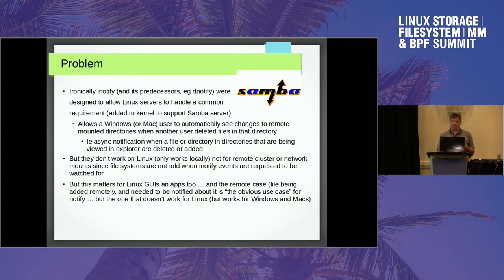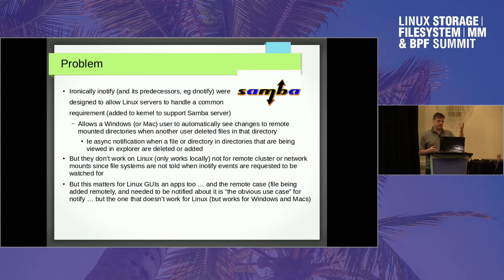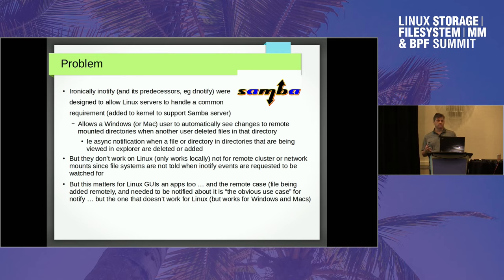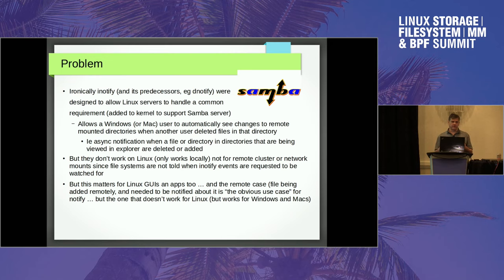Network file system clients or cluster clients have no way of waiting on notify events easily right now. Maybe they could hook it in user space. In the SMB driver I have an ioctl you can call if you want to wait on a notify event, but then we'd have to change all the apps in user space to use a separate ioctl for each file system. File systems are not told to wait on anything right now, and there's no way they can tell that their inode has notify events queued for it.